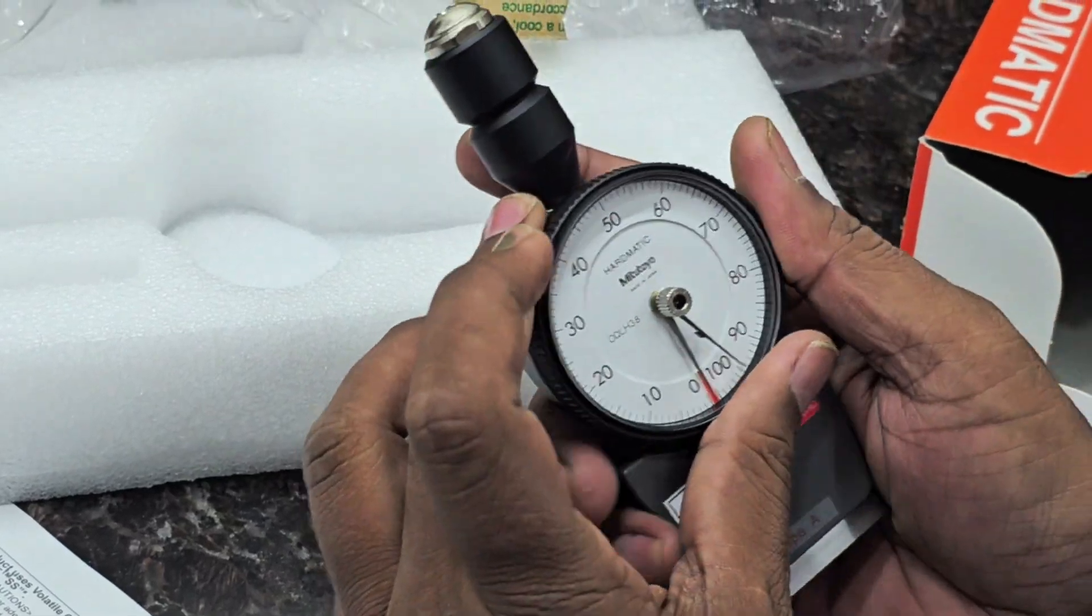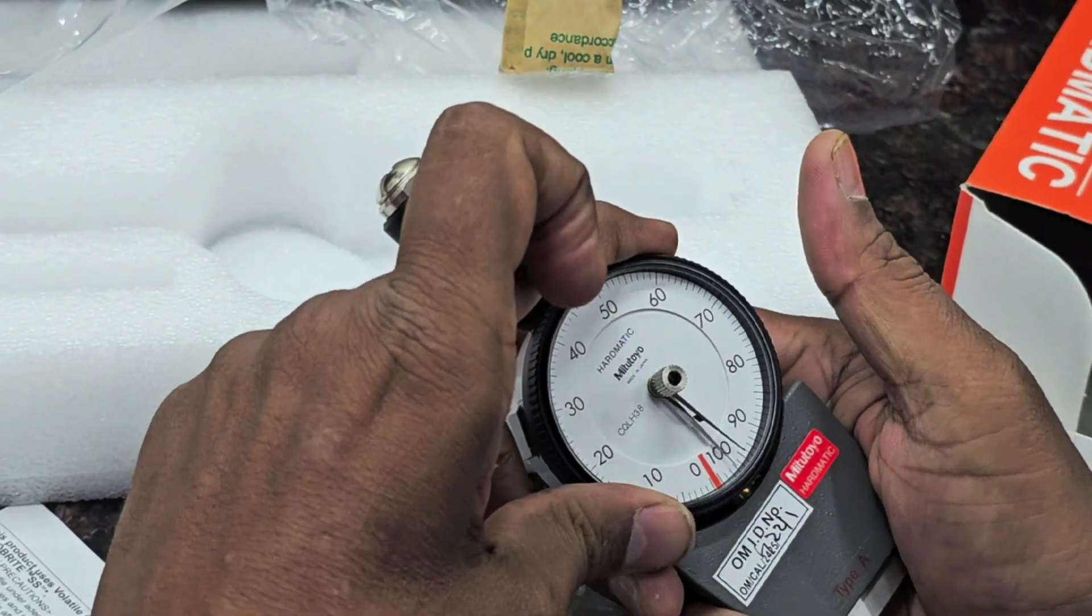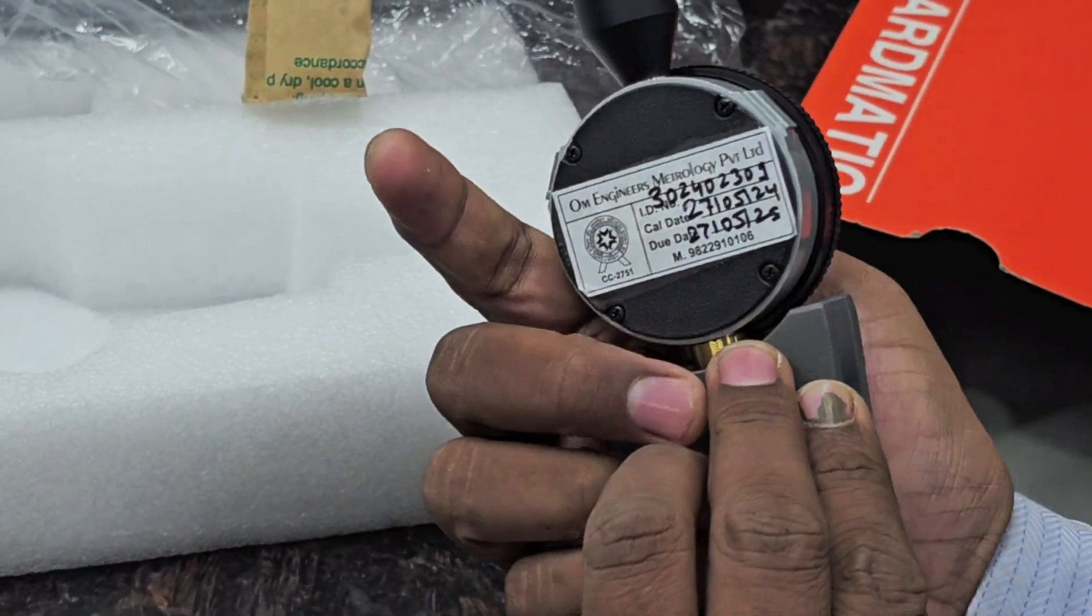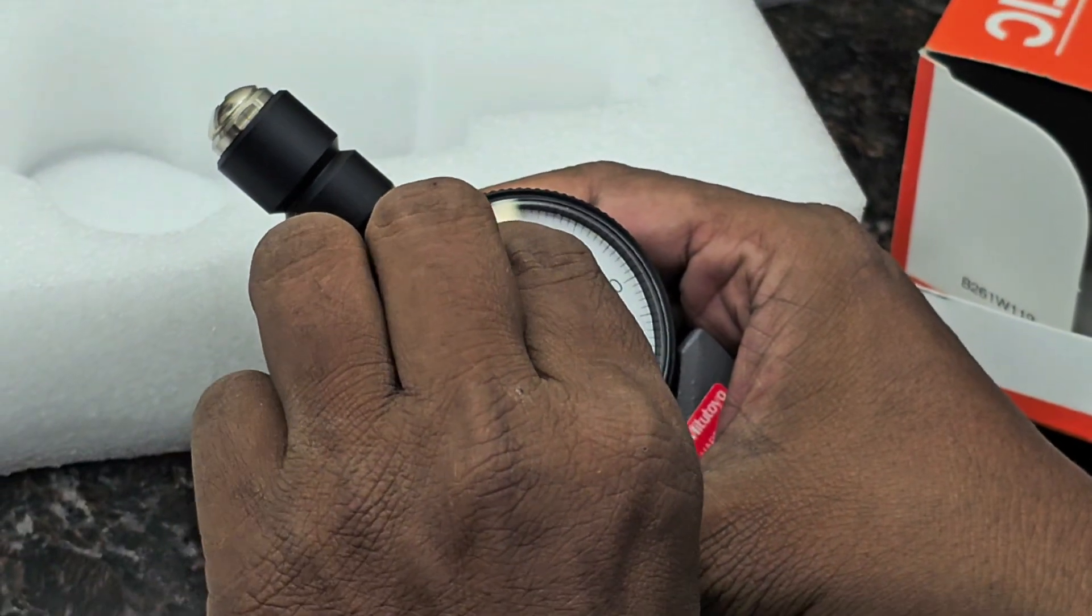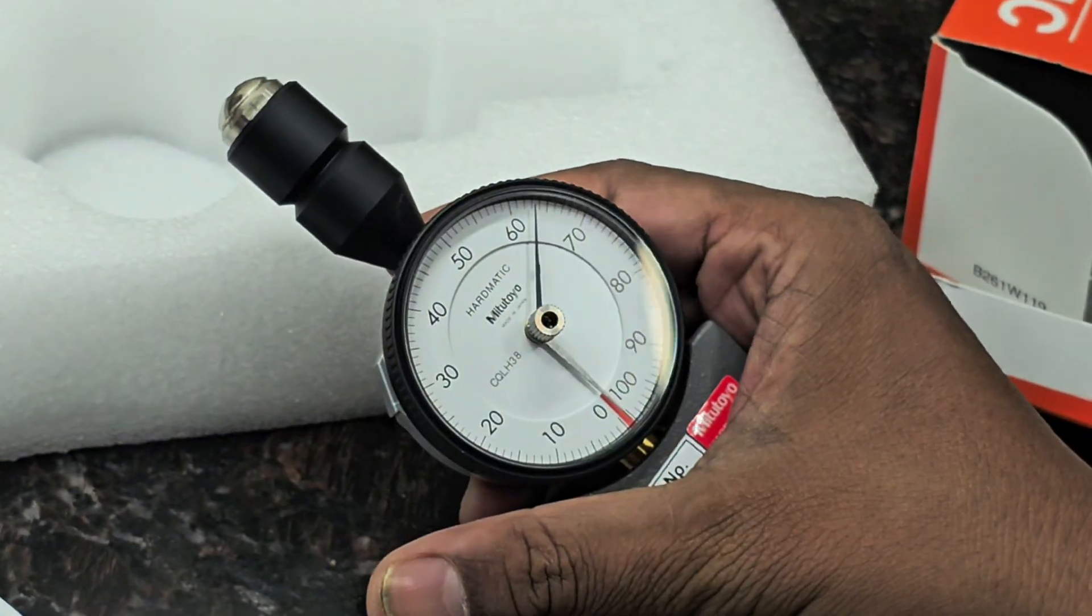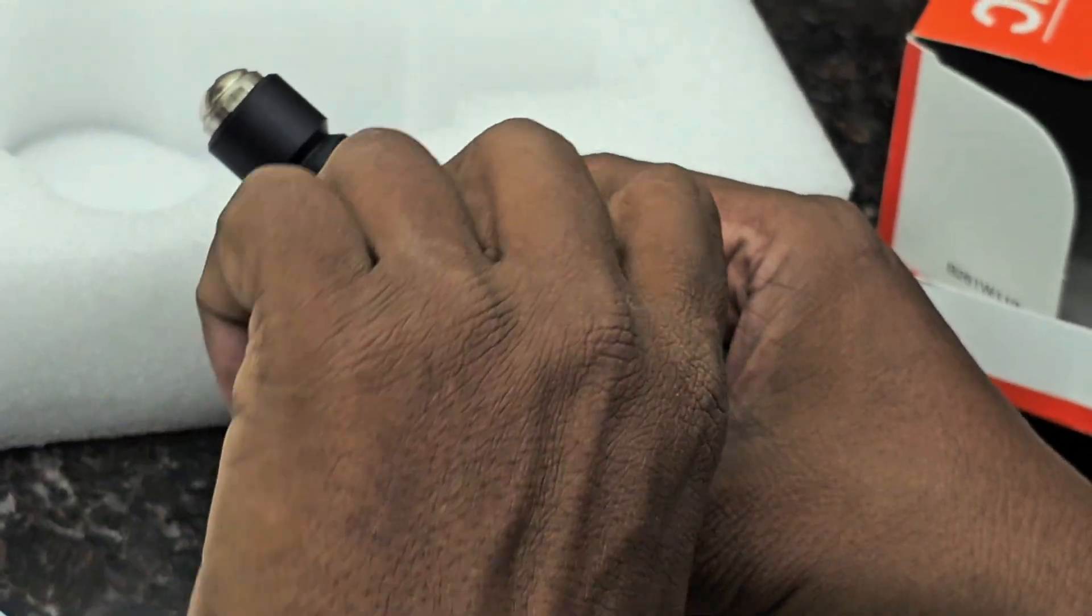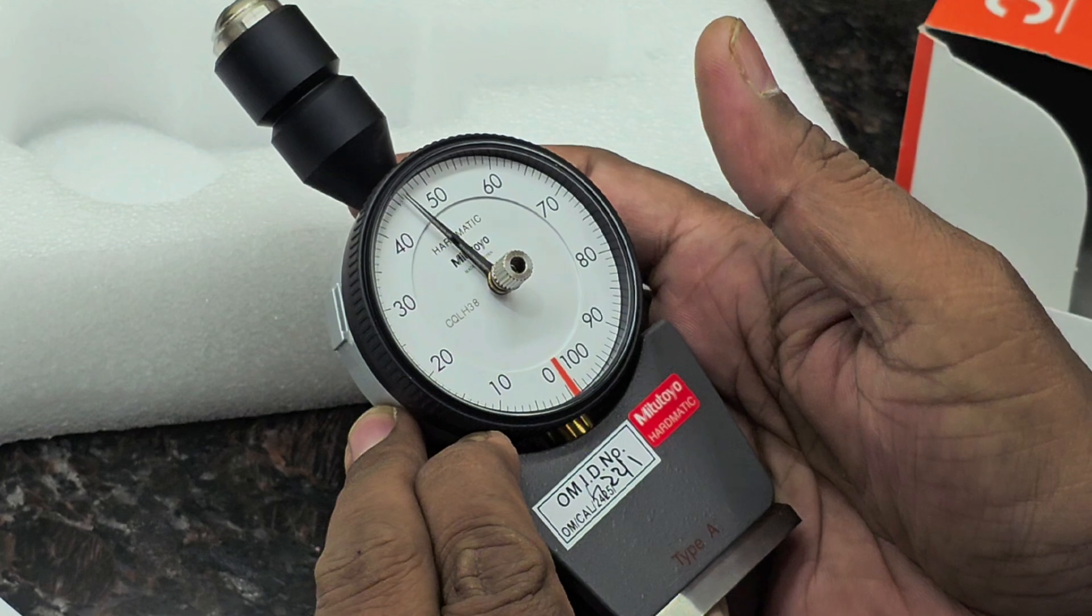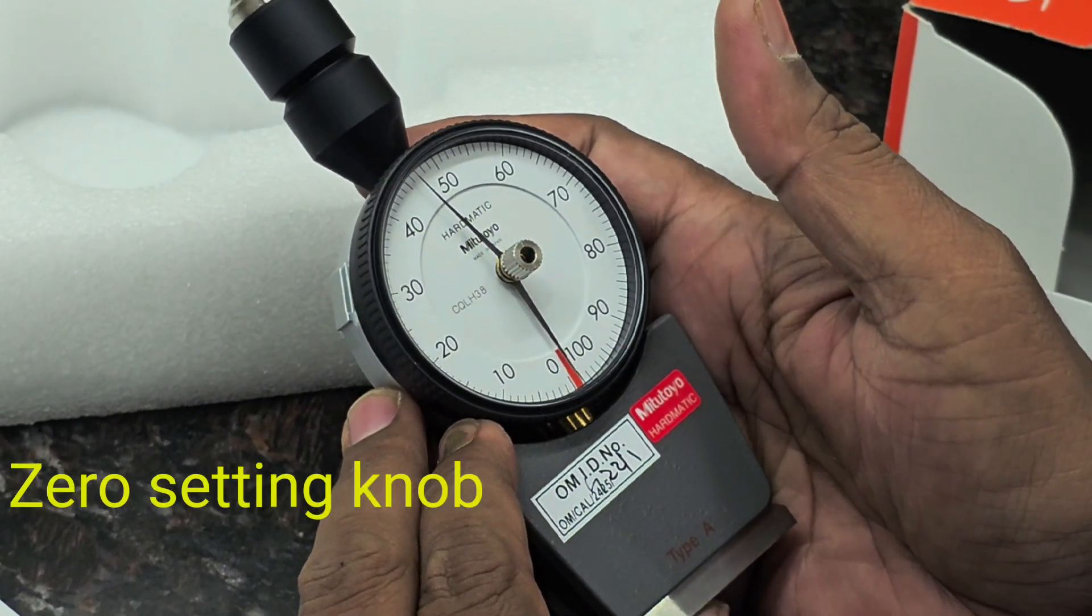This is the Mitutoyo Hardmatic. You can remove and rotate the bezel. These are the zero setting knobs. In this way you can check it.